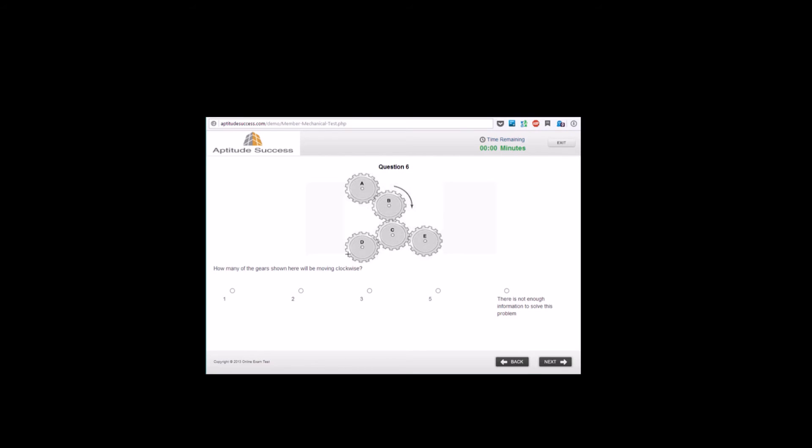The question is asking us how many gears are moving clockwise. Gear B is moving clockwise, so that is one. The best way to solve a problem like this is: if it's moving clockwise, that tooth will push that tooth backwards. So A will be moving anti-clockwise, because B is moving clockwise and pushing it around. So that means we've got one moving clockwise.